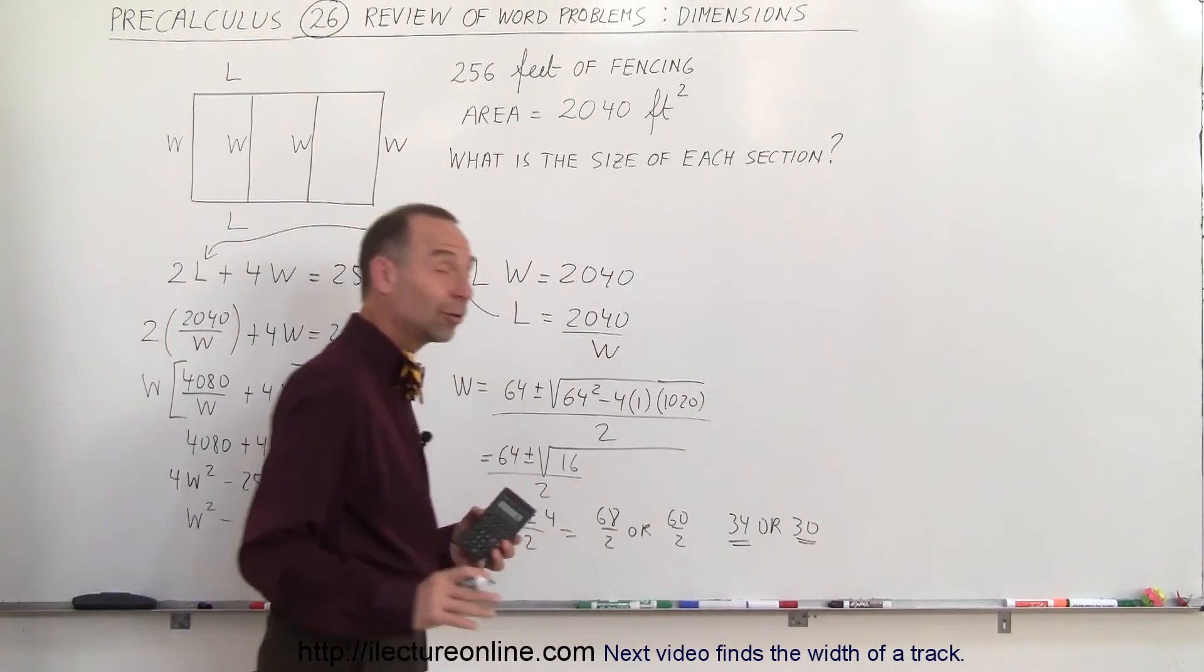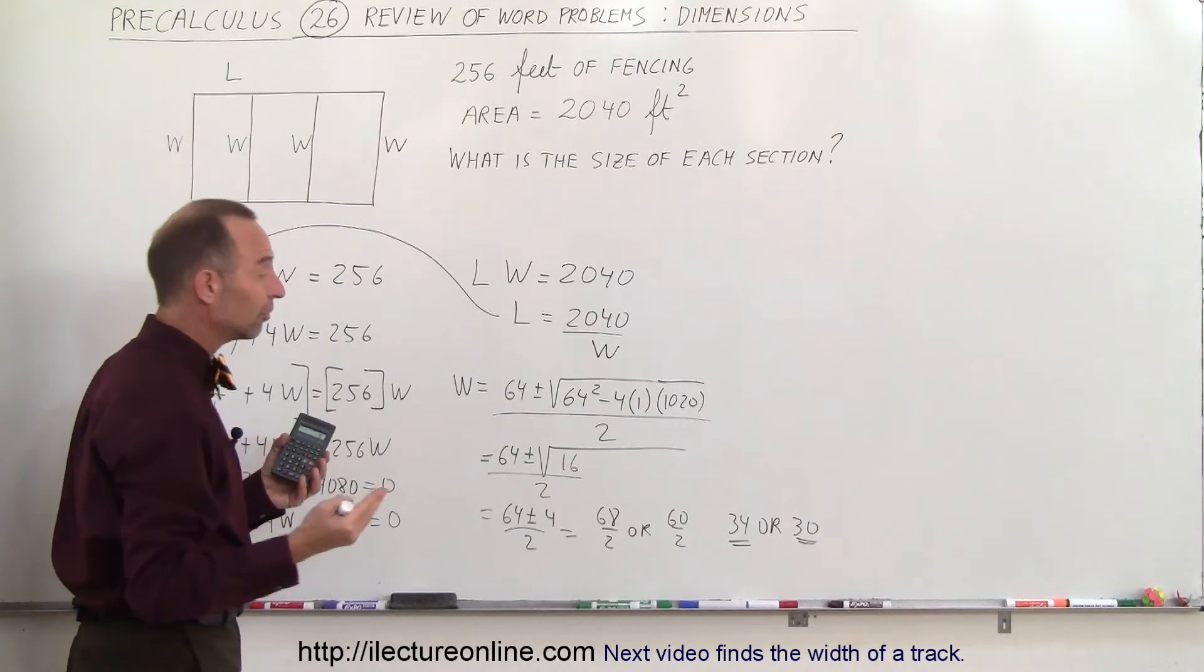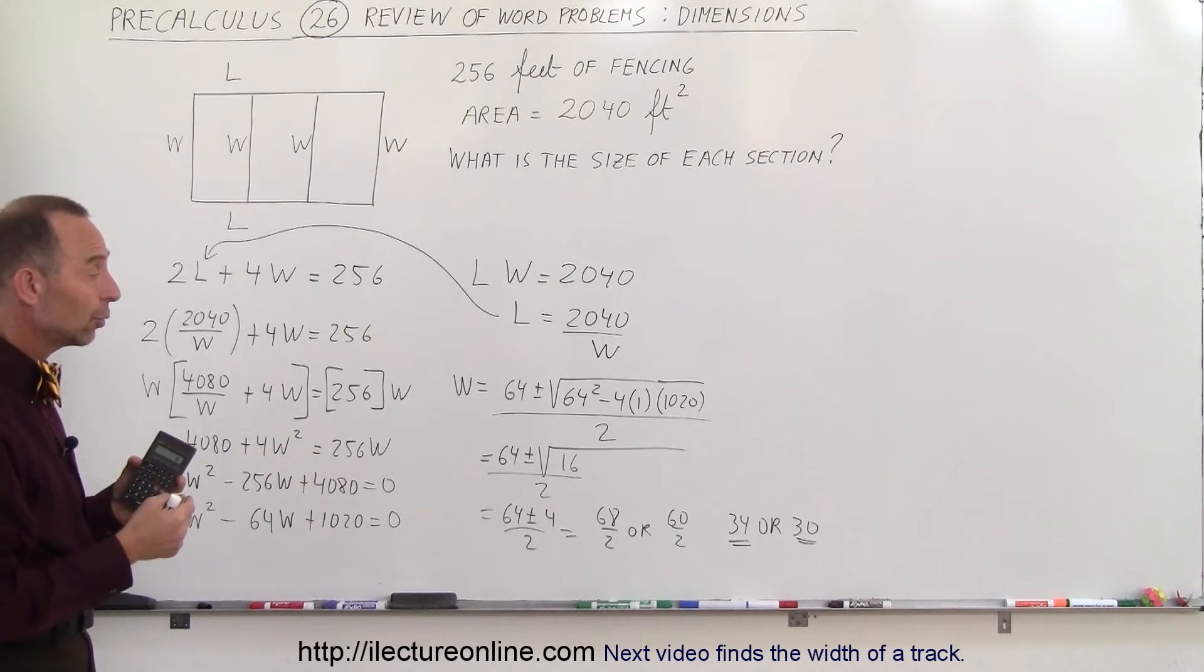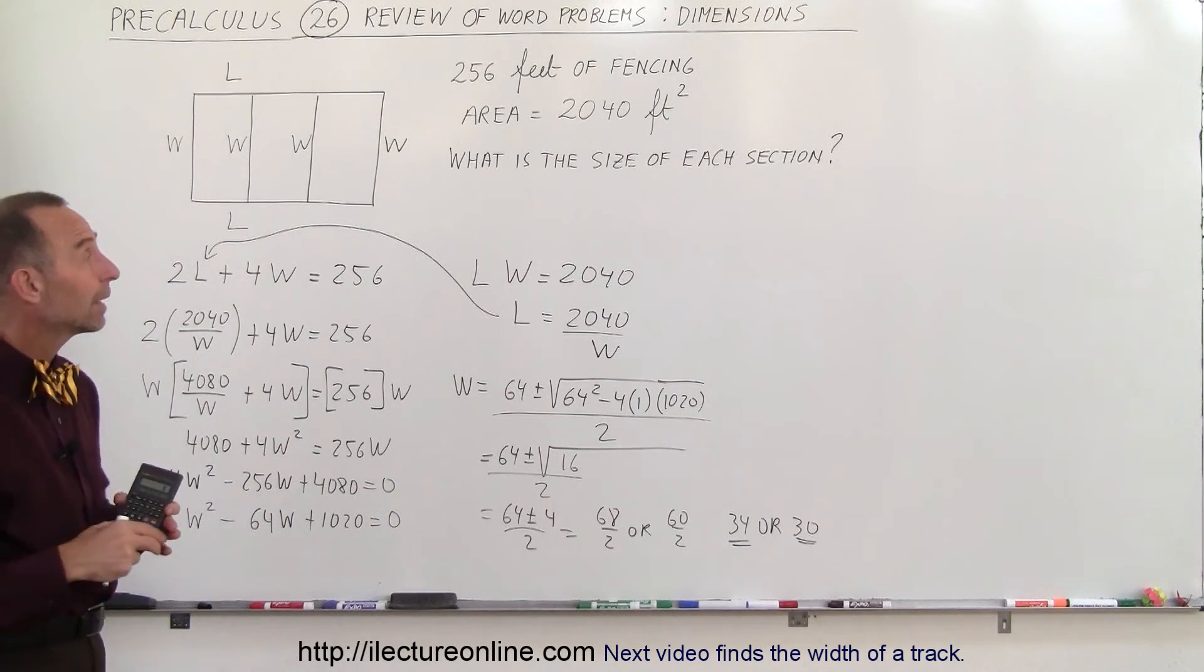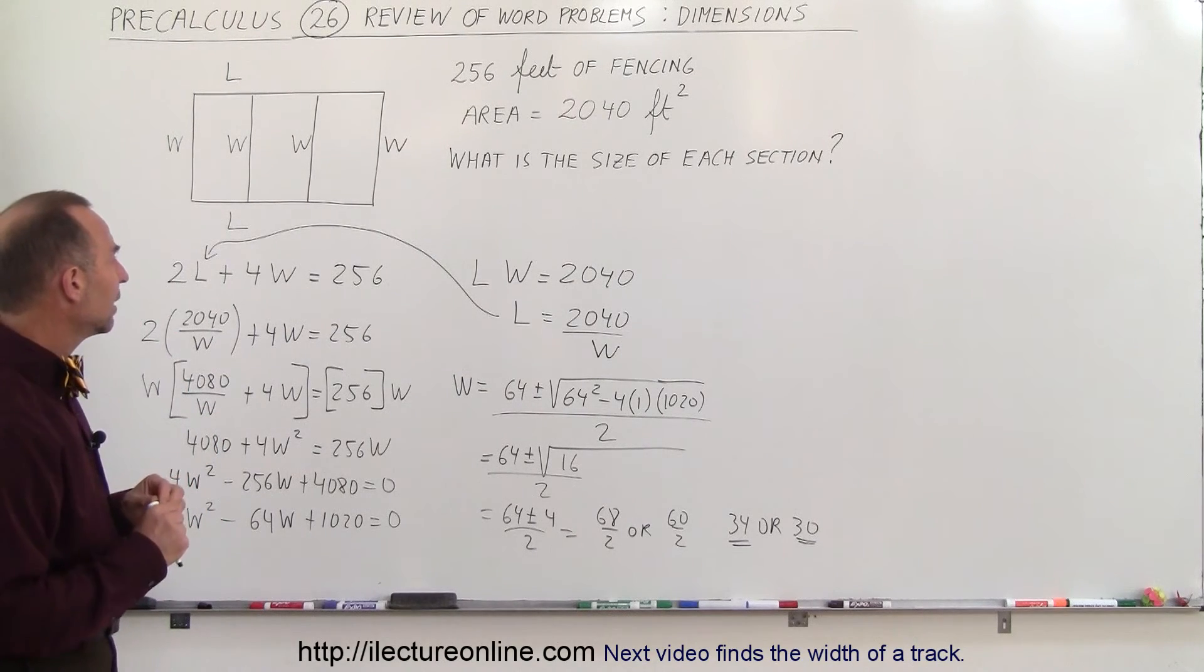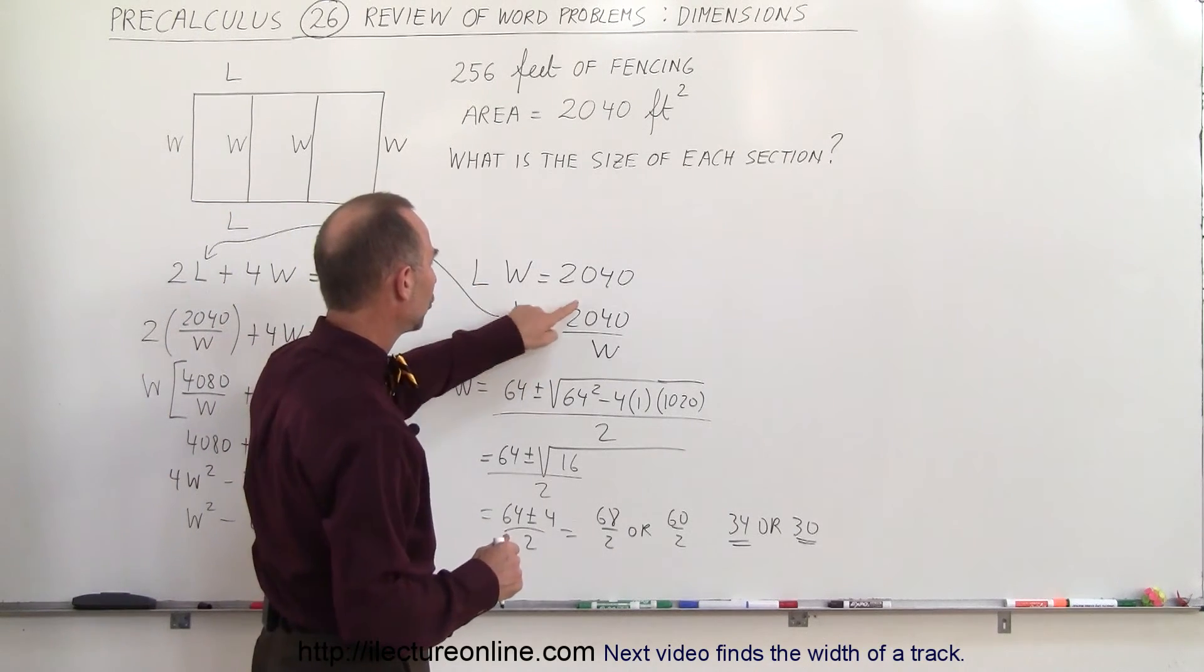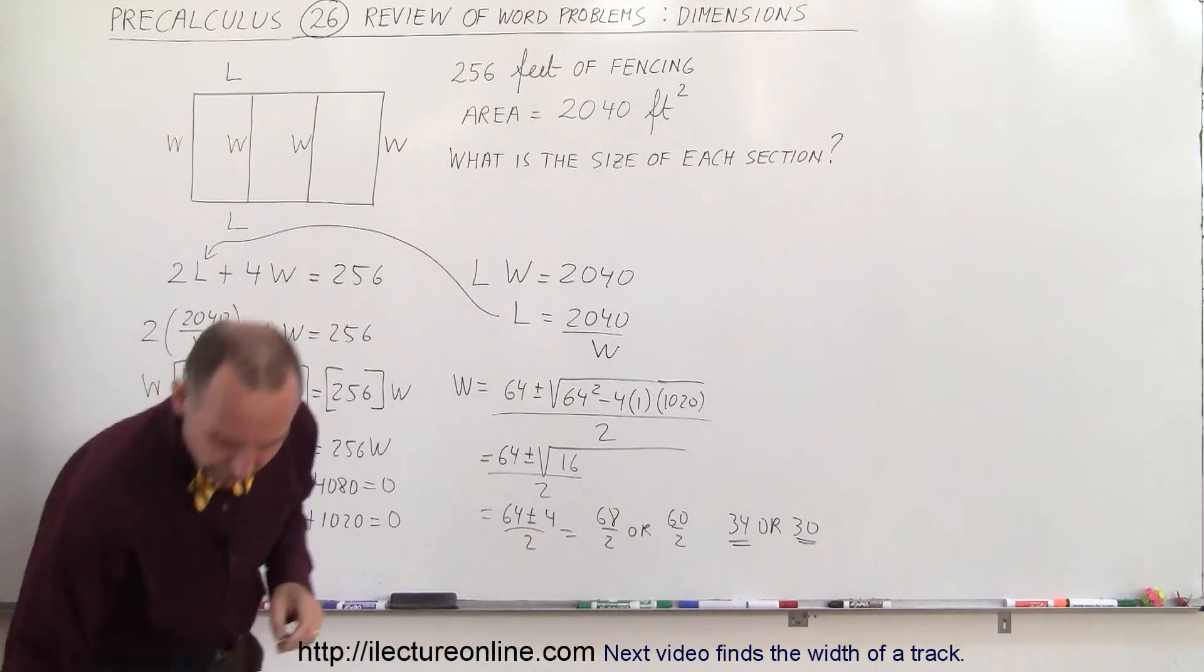So let's go back and see what we solved for, we solved for W and so it's telling us that we have two options. We can make the width 34 or we can make the width 30. Well let's see here, if the width is 30, then the length is 2040 divided by W. So let's try that. So in the case that the width is equal to 30,